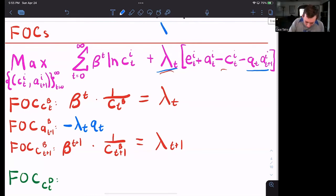But we're not done because we need to also think about the budget constraint next period. What is the budget constraint next period? Well, the budget constraint next period is lambda T plus one, okay, ET plus one I plus AT plus one.